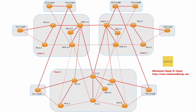Region Z has P1Z and P2Z — two routers functioning as P routers only. It also has four PE routers: PE3, PE4, PE5, and PE6. These PE routers are connected to the P routers within the region, and they are also connected to PE-P routers in other regions. For example, PE3Z and PE4Z are connected to PE-P1X and PE-P2X, and the same applies for PE5 and PE6.